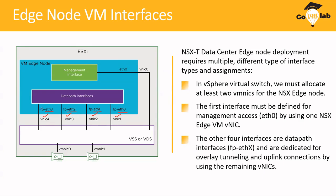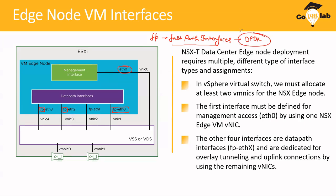These interfaces have something called FP, which stands for FastPath. ETH0 does not have any FP, but the remaining interfaces do. FastPath interfaces leverage the DPDK framework provided by Intel for faster processing of NSX traffic.